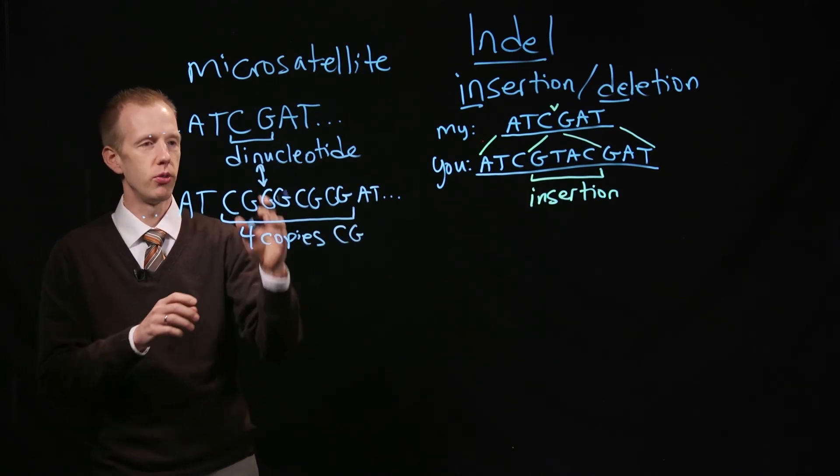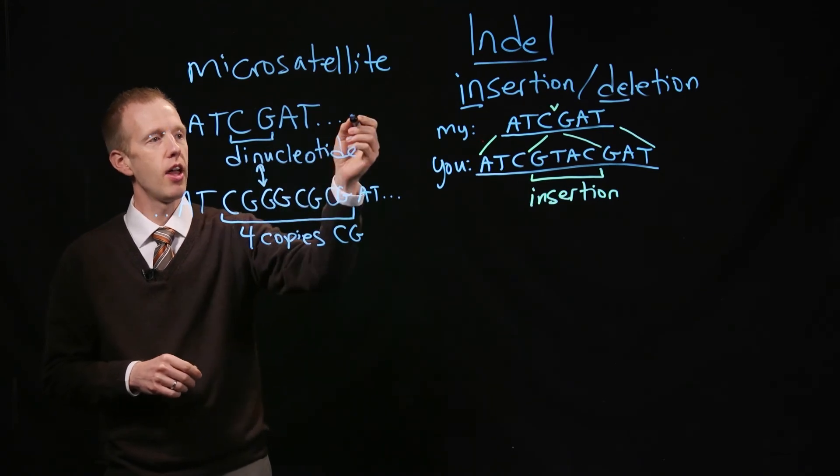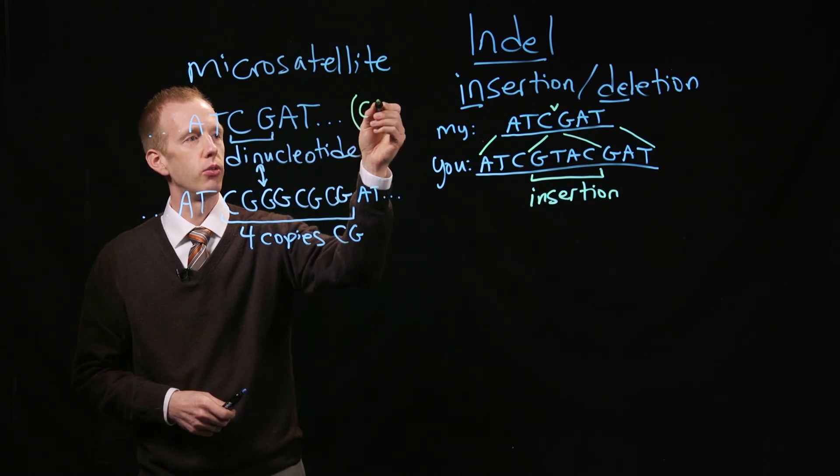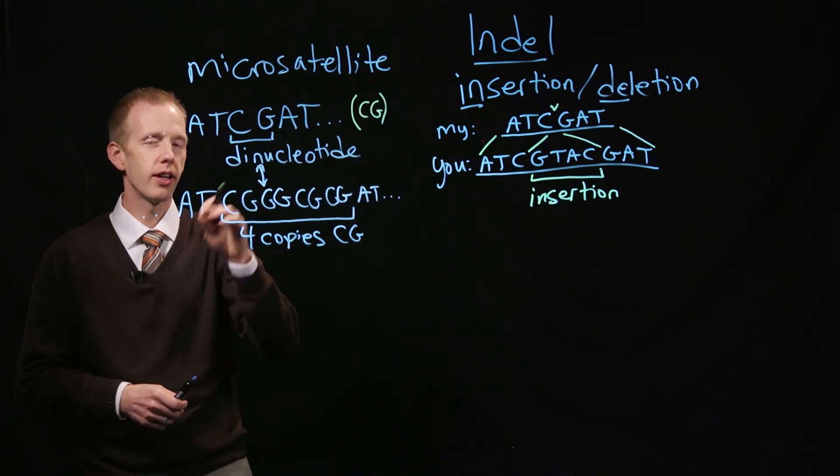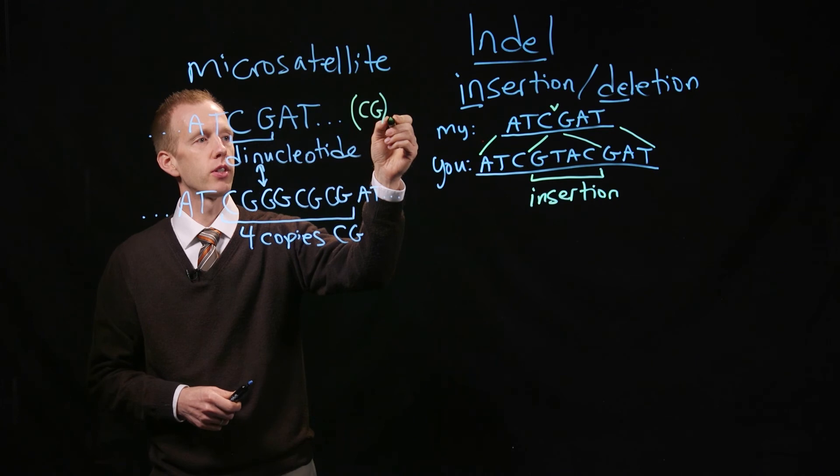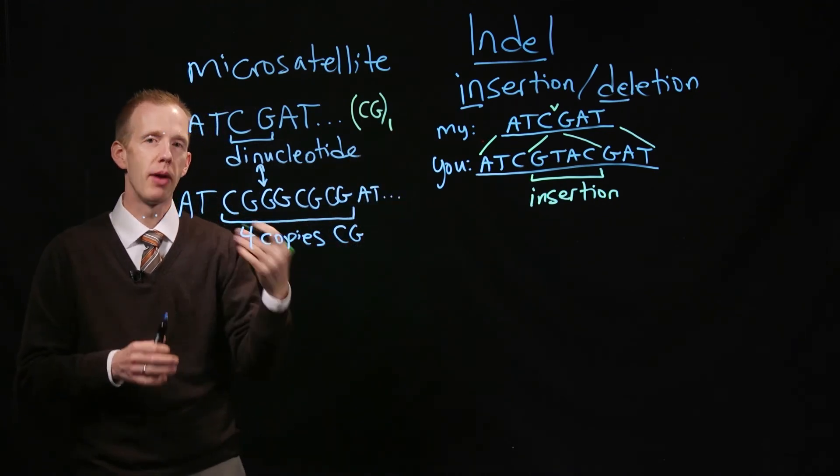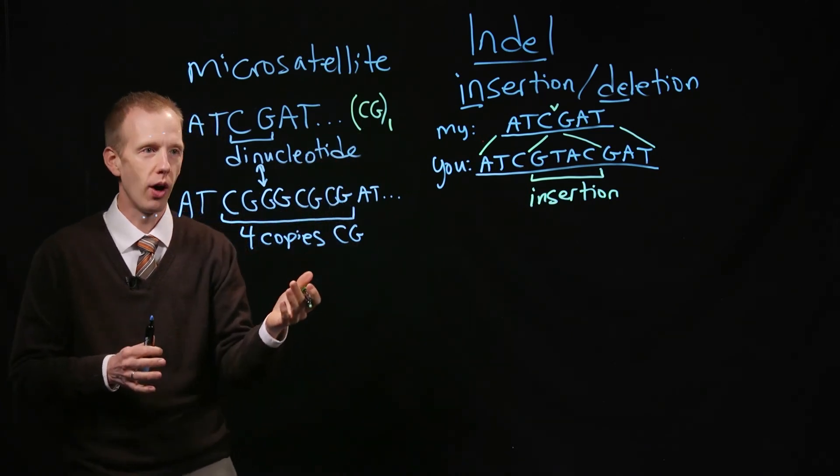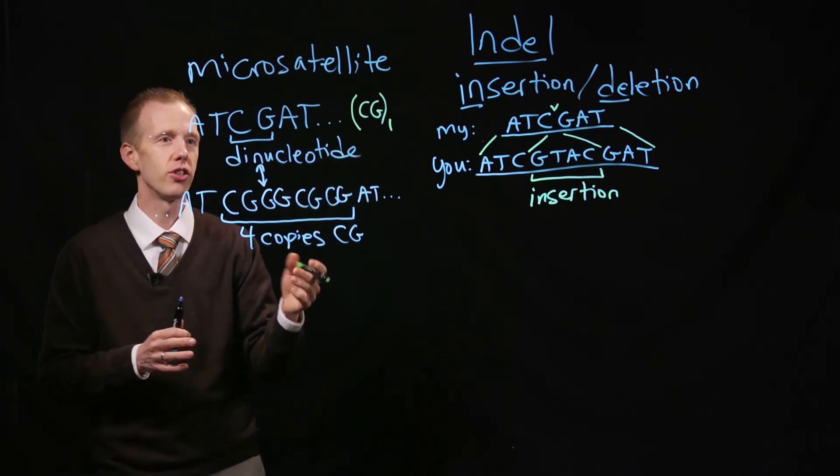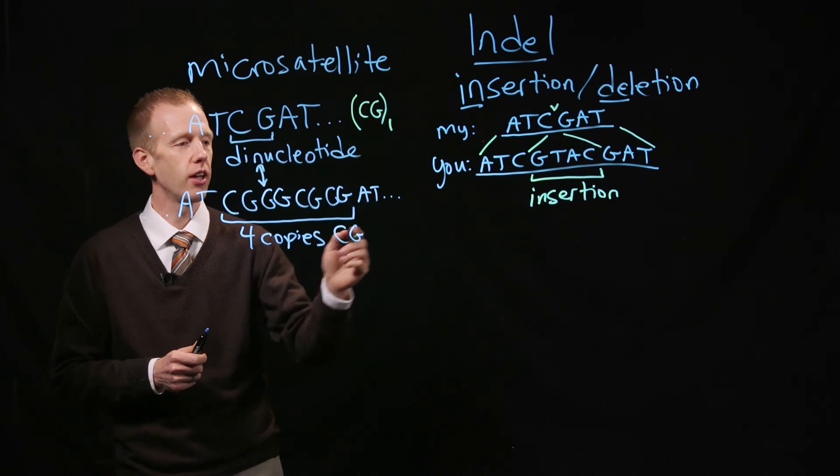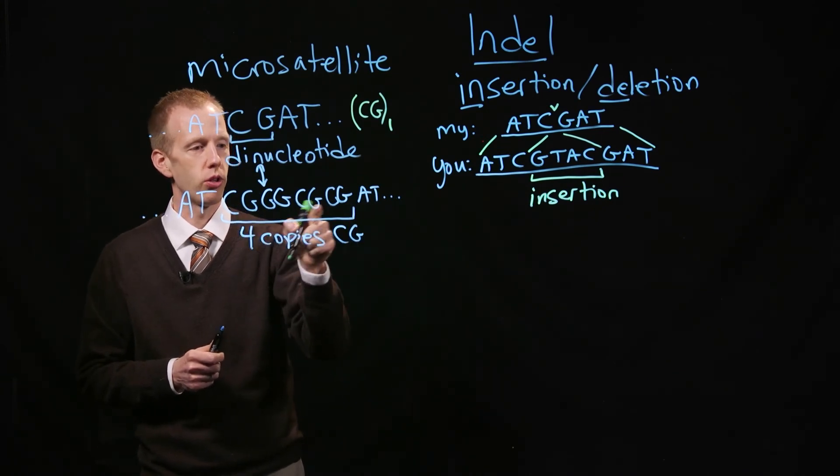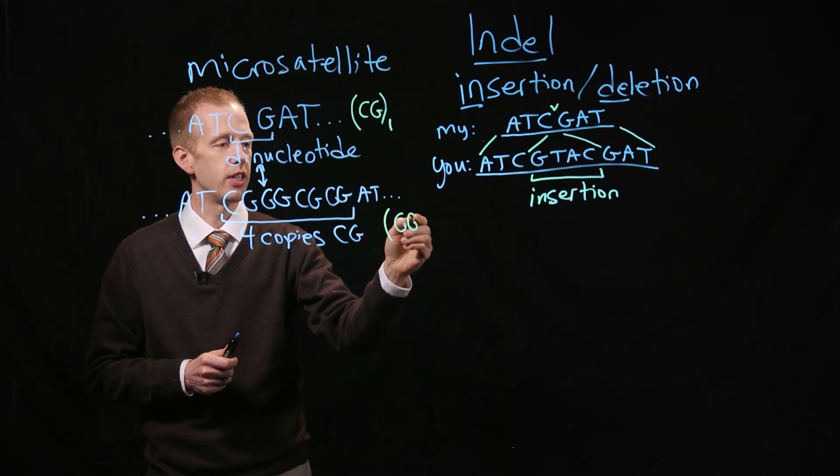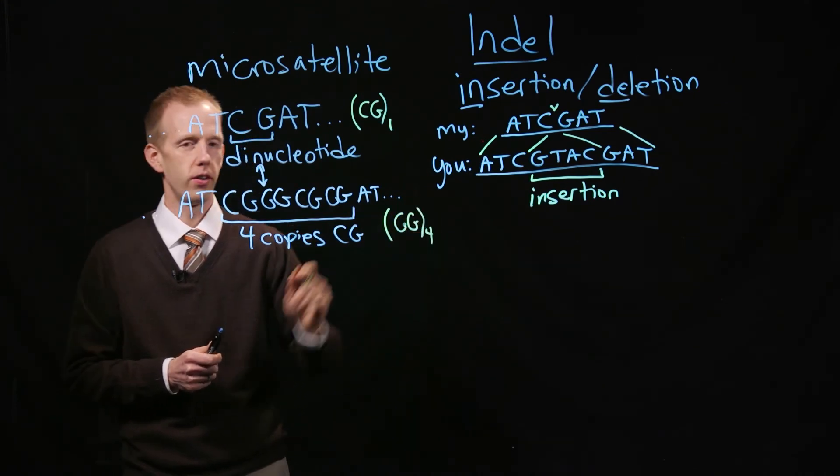Geneticists will often refer to this nomenclature as this individual has, we use parentheses to flank the nucleotides that are repeated, and we use a subscript number to represent how many copies of that are found at that location on a chromosome. So this individual is a CG1 repeat, there are no duplications of this CG. This individual would be a CG4 genotype.